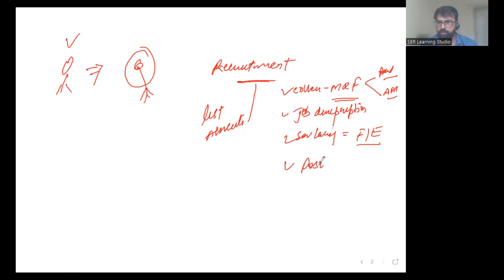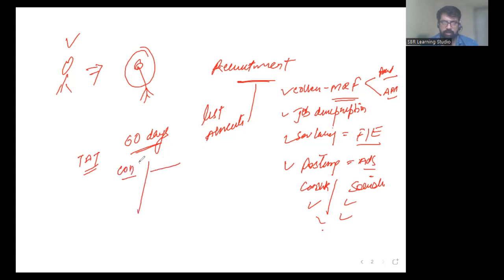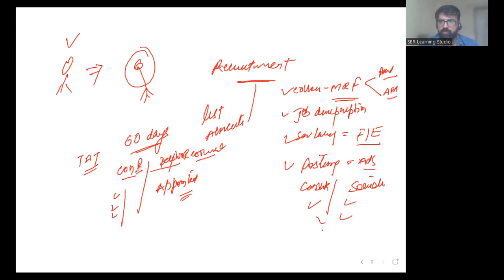The salary range — minimum and maximum — depends on whether the role requires a fresher or lateral hire. Once salary is defined, the next step is posting the vacancy via consultants, social media, or job portals. After posting, you have a turnaround time — for example, 60 days — to either conclude the position with an offer or deploy a resource. Onboarding and induction then follow.